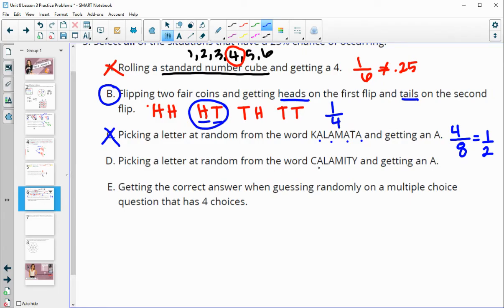Picking a letter at random from the word Calamity and getting an A. So two A's here out of one, two, three, four, five, six, seven, eight letters. That reduces to one-fourth, which is 25%. Getting the correct answer when guessing randomly on a multiple-choice question that has four choices. So if there's four choices, A, B, C, or D, and what's the chance that you get the right one? And there's only one correct answer. So one correct answer out of four would be a one-fourth chance or a 25% probability. So that one would be good.